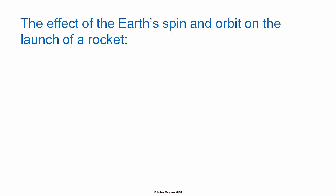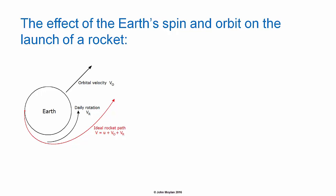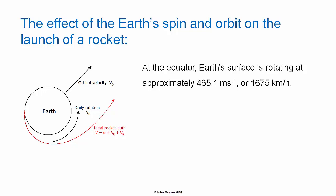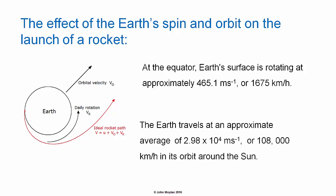The effect of the Earth's spin and orbit on the launch of a rocket: because the Earth is spinning on its axis and orbiting the Sun, the motion of the Earth is going to affect the launch of a rocket. At the equator, the Earth's surface is rotating at approximately 465.1 meters per second, or 1,675 kilometers per hour. The Earth also travels at an approximate average of 2.98 times 10 to the 4 meters per second, or 108,000 kilometers per hour, in its orbit around the Sun.